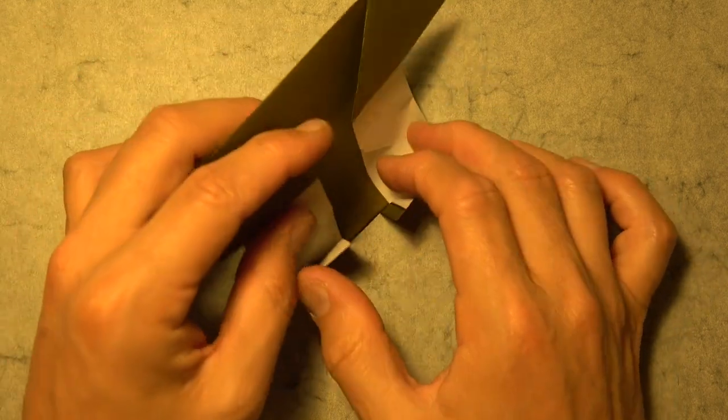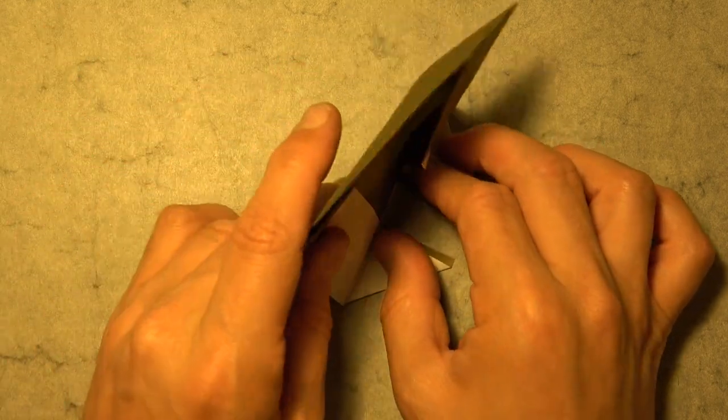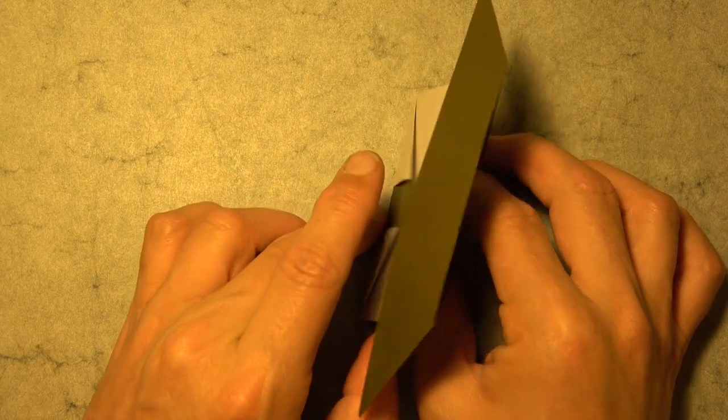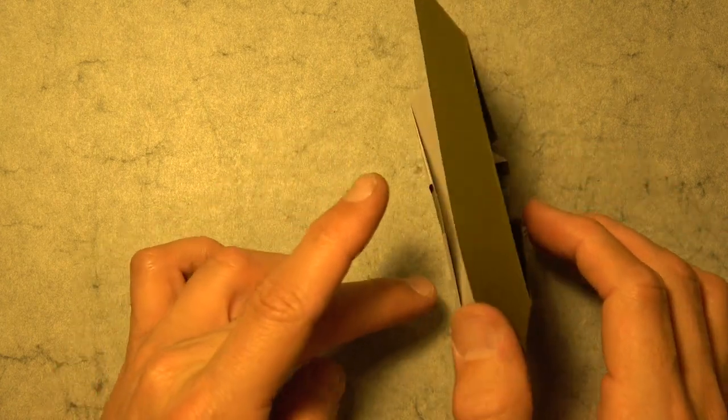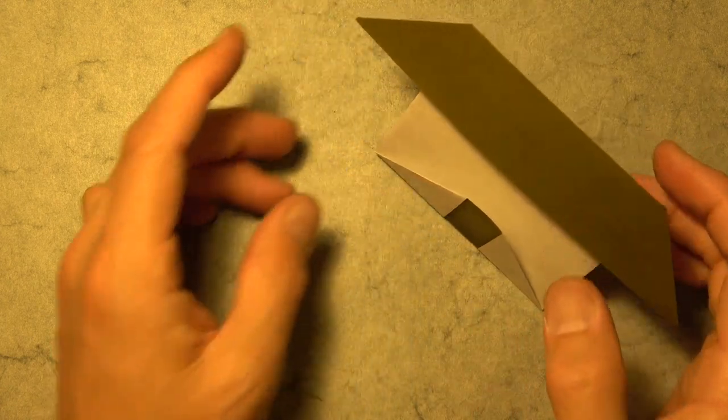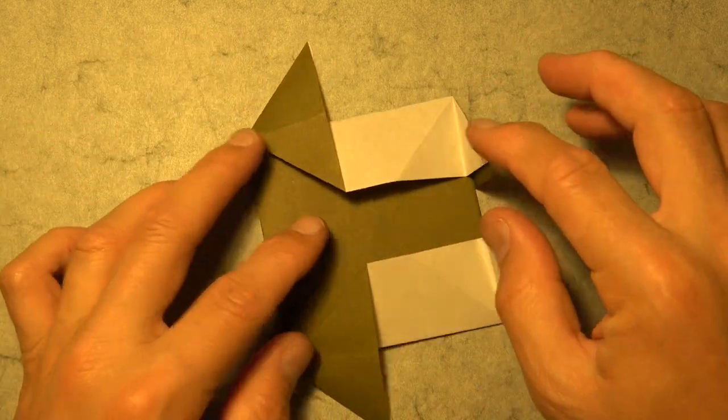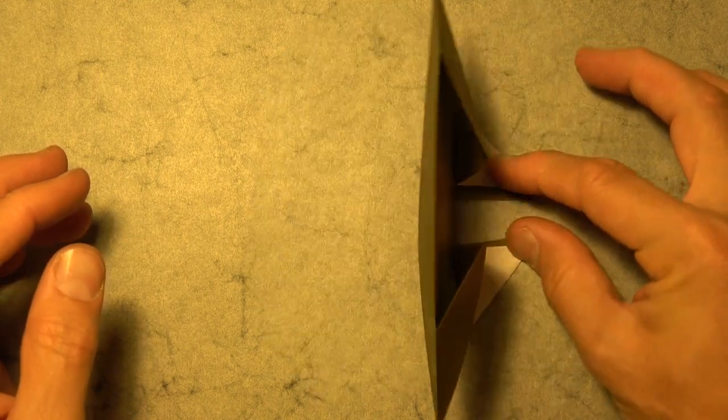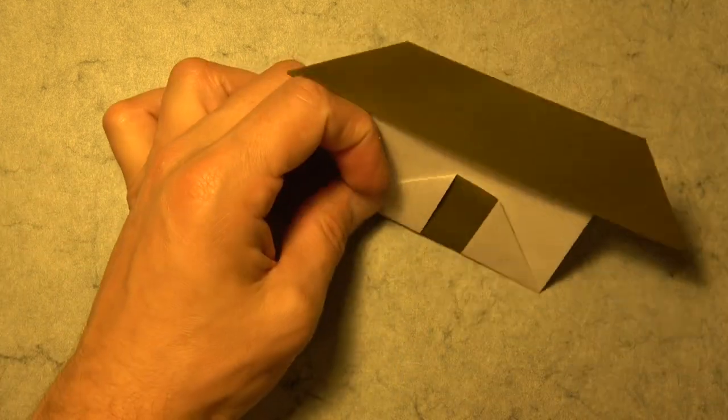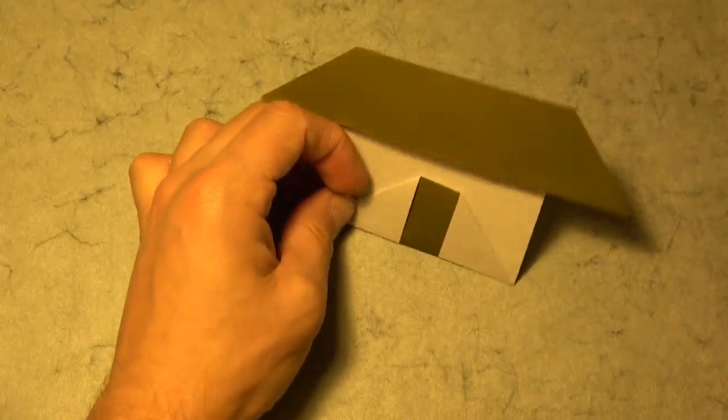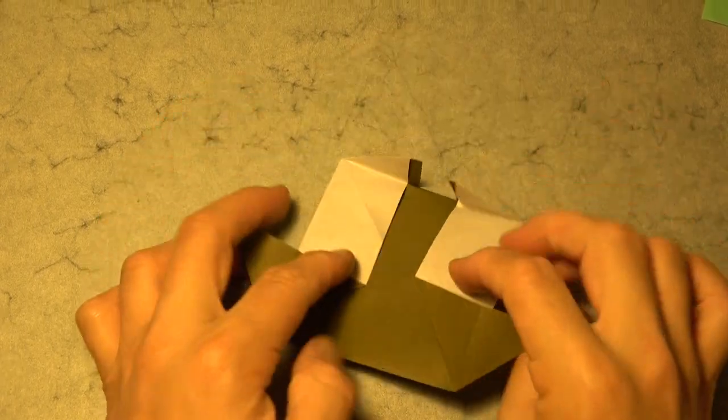So fold them up like that and you can just kind of balance the house right on those flaps. So it's like that and then you put it down like this and then these flaps are sticking up now and you press them down and the house sticks up.